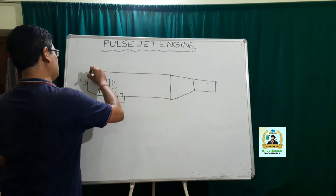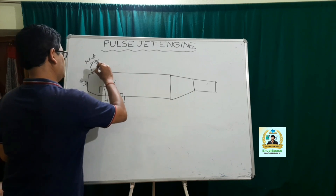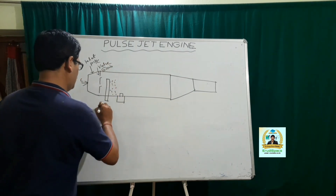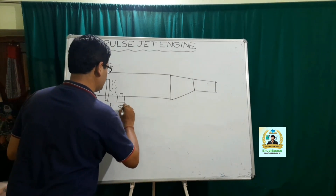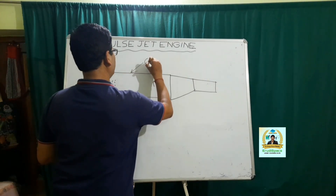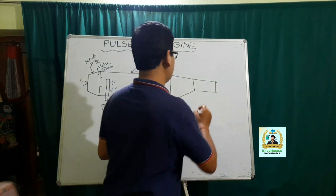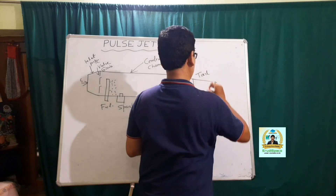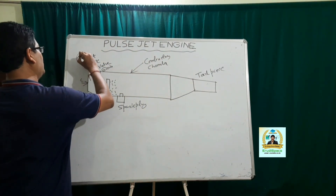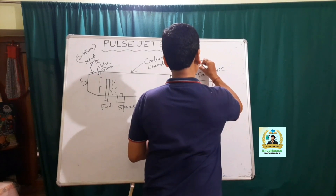This is the inlet pipe. This is the fuel supply, this is the spark plug, and this one is the combustion chamber. This section is the discharge nozzle, this one is the diffuser, and this one is the discharge nozzle at the exit.